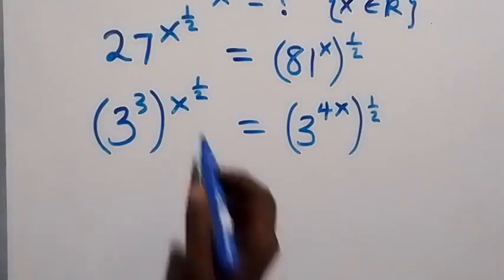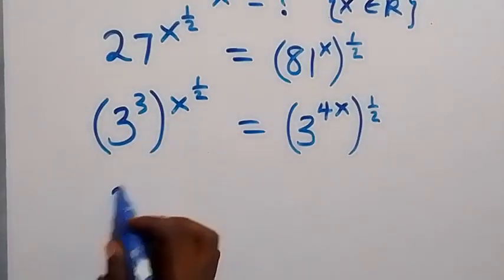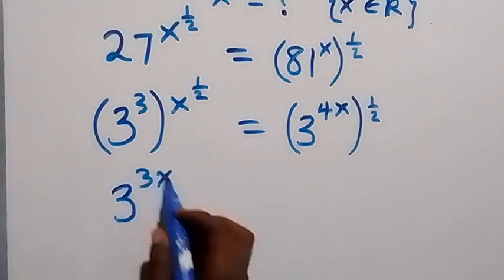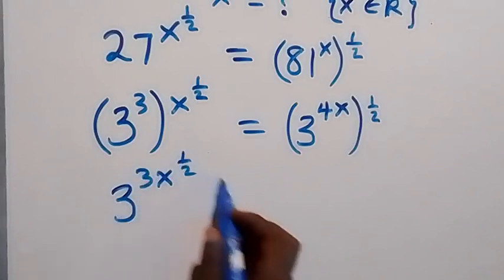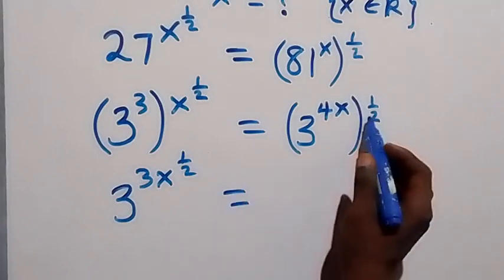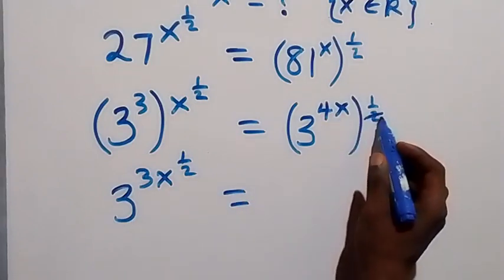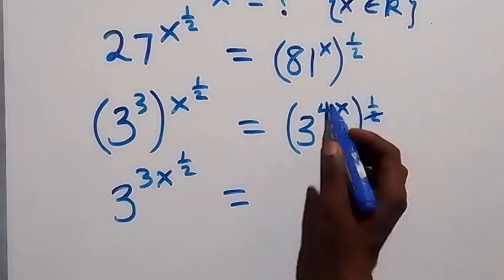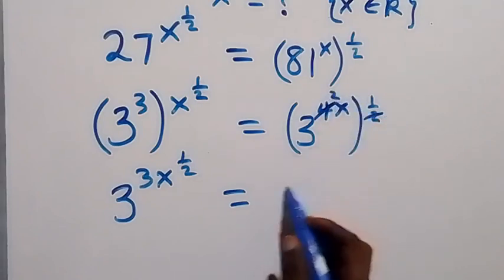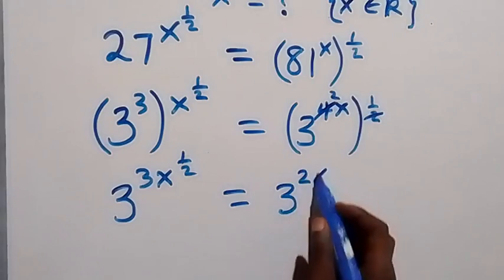From here, the powers multiply. This becomes 3 raised to power 3x, raised to power half, equals the right side where the powers multiply to give 3 raised to power 2x.